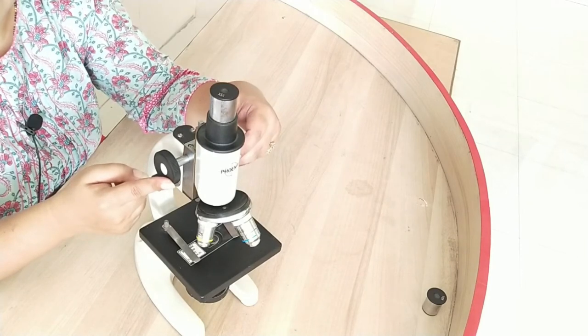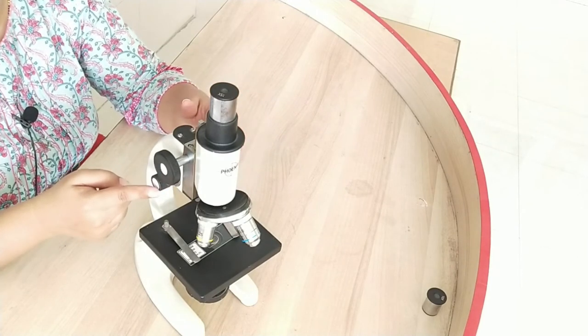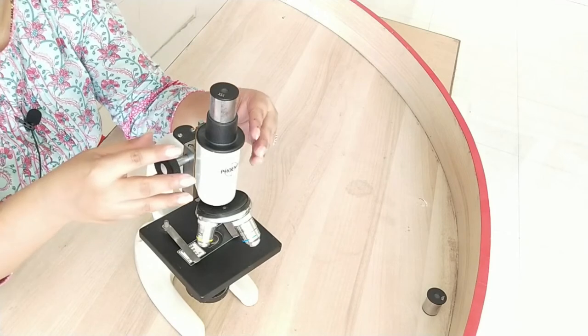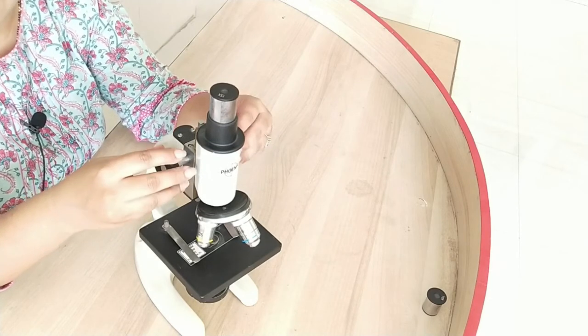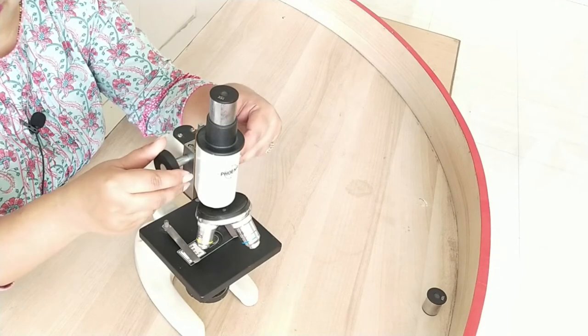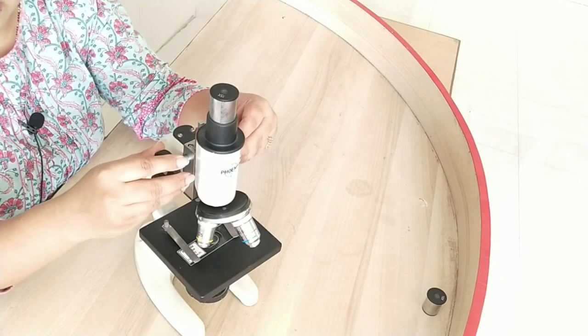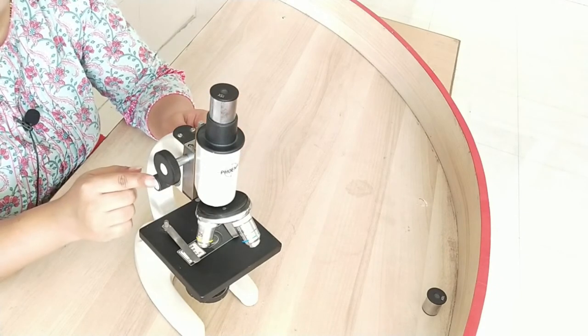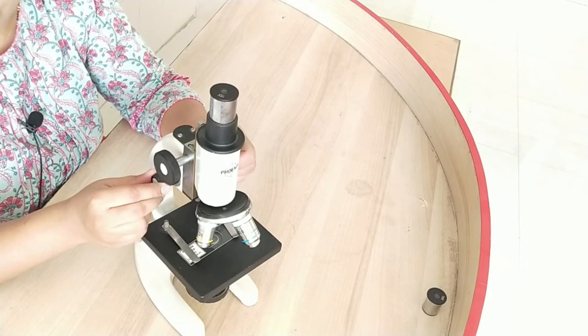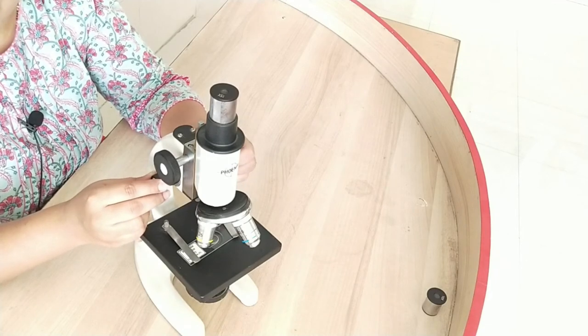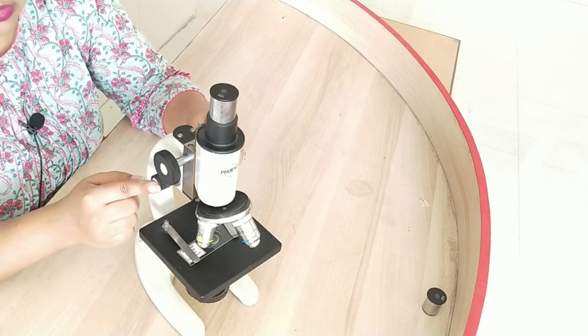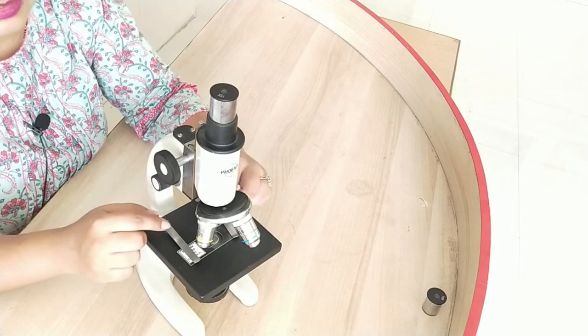Now come to these adjustment knobs. This larger one is the coarse adjustment knob and is used to move this body tube up and down, and this smaller one is fine adjustment knob. It is used for sharp and fine focusing so that we can see the cells.